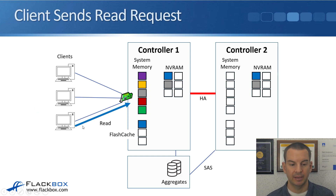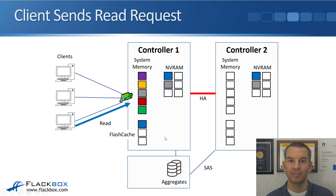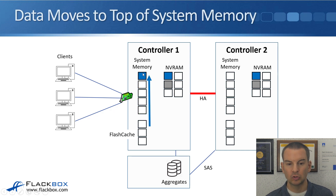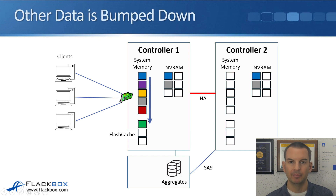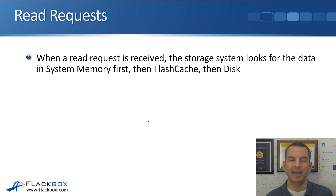When a client sends in a read request for the blue data, without FlashCache it would have had to be fetched from disk. But because we have FlashCache, Controller 1 first checks its system memory — it's not there — then checks FlashCache, and finds it there. So the data is served from FlashCache, which is much quicker than serving it from disk. The data is sent back to the client, then becomes the hottest data and gets put into the top slot in system memory. When a read request is received, the storage system looks for data in system memory first, then FlashCache, then disk — it's hierarchical.